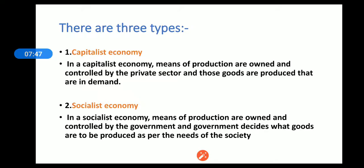The key difference is: in a capitalist economy, goods are produced as per market demand, but in a socialist economy, goods are produced as per social needs. One is market demand, the other is social needs — this is a very big difference.